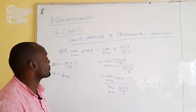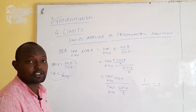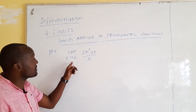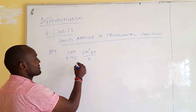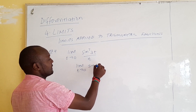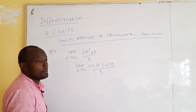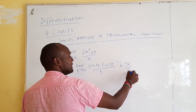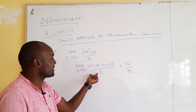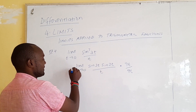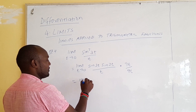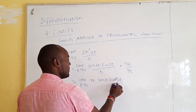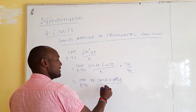Example 4: find the limit as t approaches 0 of sin(3t)·sin(3t)/t. Direct substitution gives 0/0. We expand this as sin(3t)·sin(3t)/t, and to match the identity sin(3t)/(3t), we multiply both numerator and denominator by 9 (since 3t × 3t = 9t²).